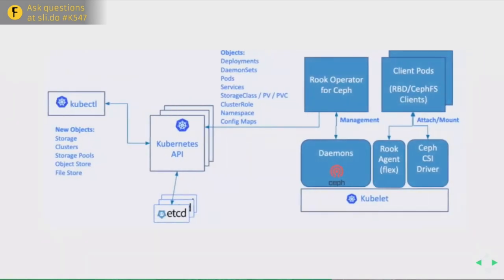Here's an overview of how it all comes together. On the left you have Kubernetes and the Kubernetes APIs. On the right you have things provided by Rook: the Rook operator, clients accessing Ceph storage, and the daemons making up Ceph — all running within Kubernetes.